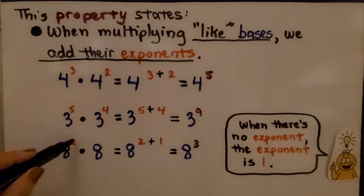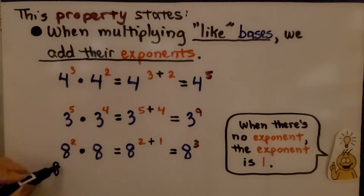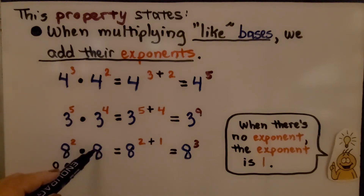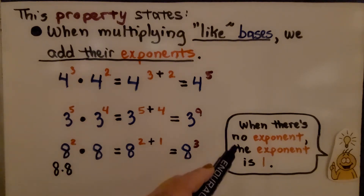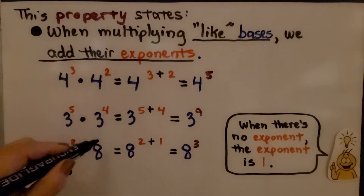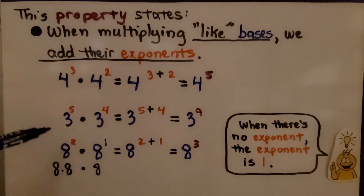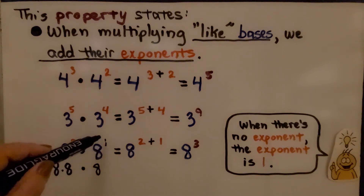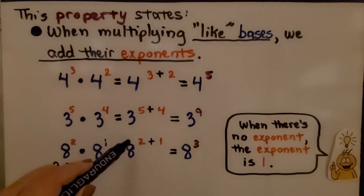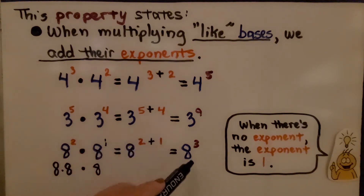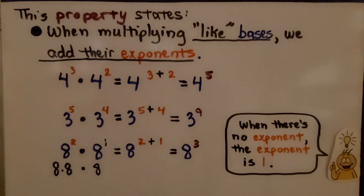Now look at this one. We have 8 to the second power, which means 8 times 8, and we are multiplying it by 8. When there is no exponent, the exponent is 1 — it's like there is a little invisible 1 there, but we do not write that. So we have 8 raised to the second power times 8 raised to the first power, which equals 8 to the 2 plus 1, giving us 8 to the third power — 8 times 8 times 8, three of them.